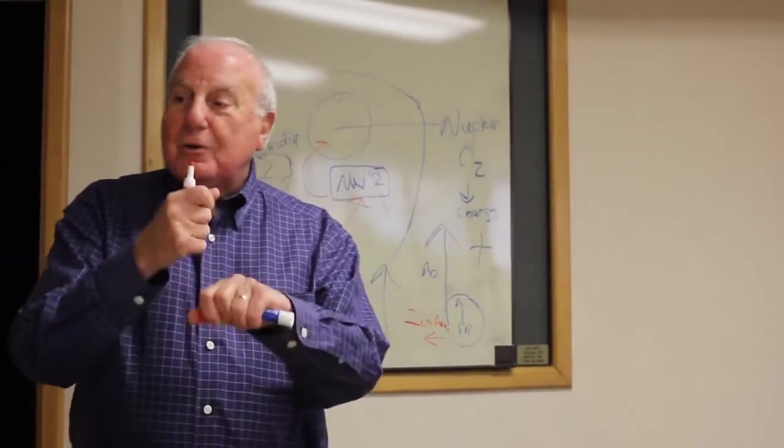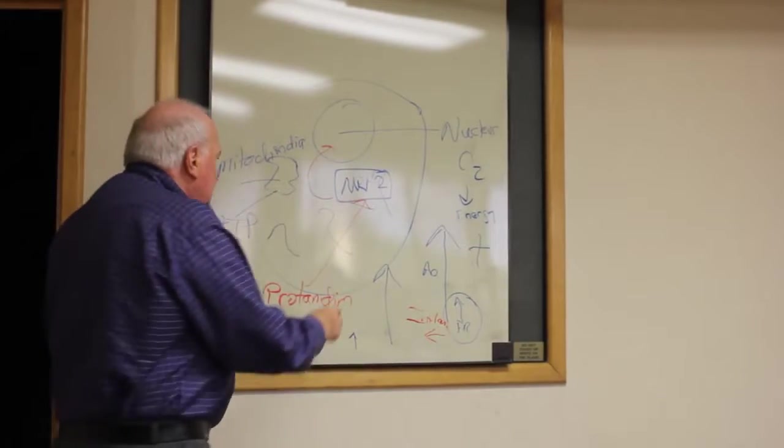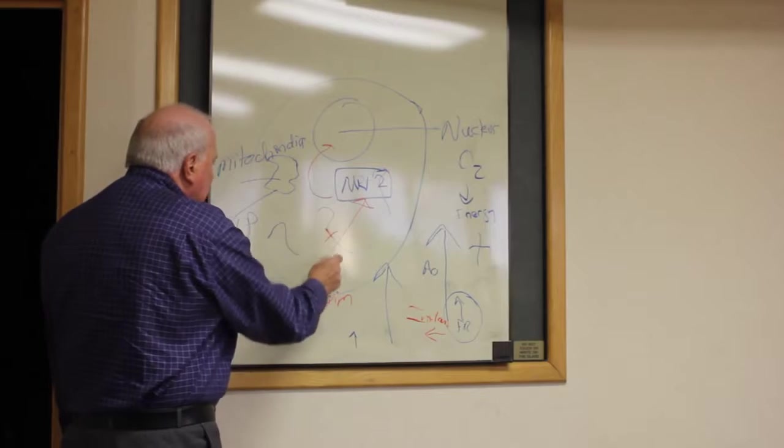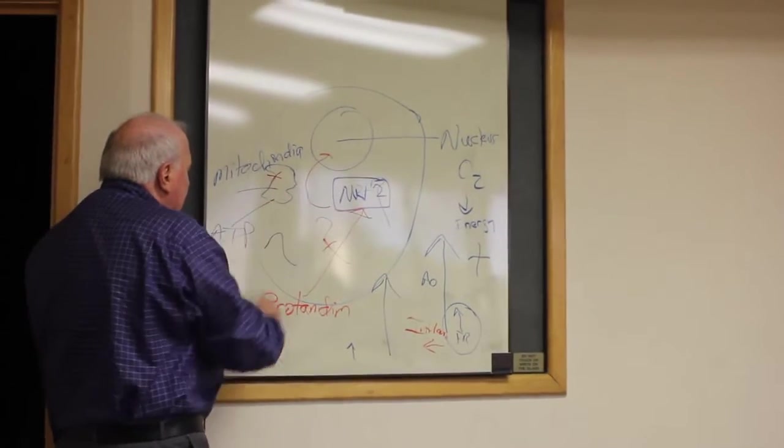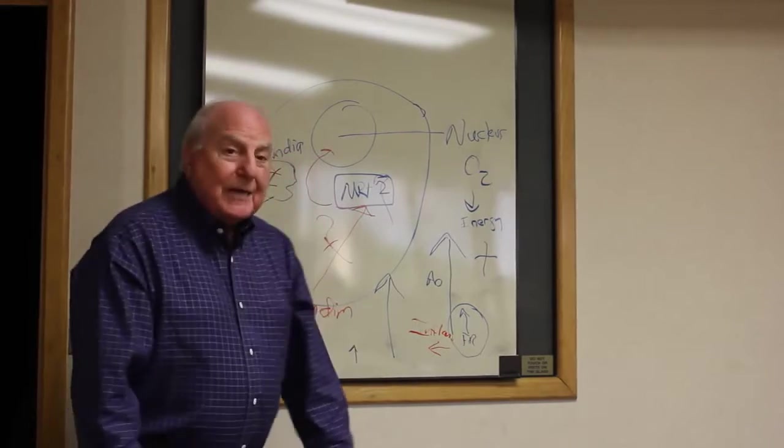Why? Because that free radical, when it doesn't get neutralized, attaches any place it wants to. It can attach to one of the engines here. It can attach to the mitochondria, it can attach to the cell membrane, it can attach any place, and when it does, it injures a cell.